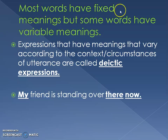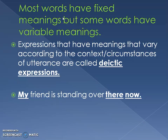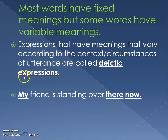Most words have fixed meanings, but some words have variable meanings. For example, if I say 'a girl,' it has a fixed meaning that you know. But some words have variable meanings — their meanings always change. Expressions that have meanings which vary according to the context or circumstances of utterance are called deictic expressions.